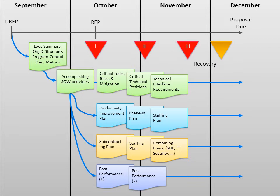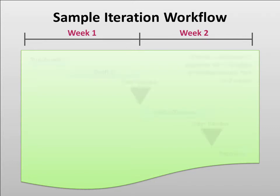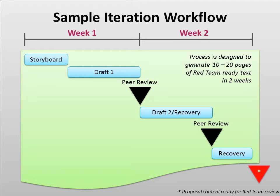What will each iteration look like? In the initial concept, we will proceed through all phases of the lifecycle in about two weeks. An iteration is done when the content is reviewed and archived. Once completed, that section of the proposal is ready for a red team review.